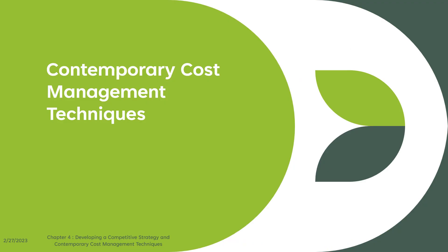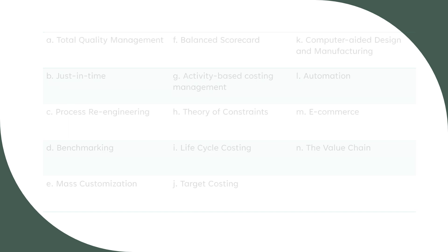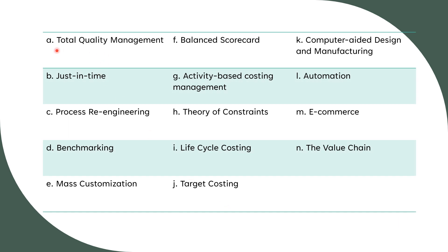Now we proceed with the 14 contemporary cost management techniques. Managers commonly use these tools to implement the firm's broad strategy and facilitate achievement of critical success factors. The 14 techniques are: (A) total quality management, (B) just-in-time production, (C) process re-engineering, (D) benchmarking, (E) mass customization, (F) balanced scorecard, (G) activity-based costing and management, (H) theory of constraints, (I) life cycle costing, (J) target costing, (K) computer-aided design and manufacturing, (L) automation, (M) e-commerce, and (N) value chain.